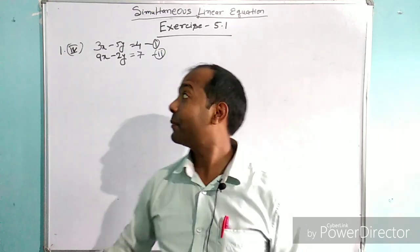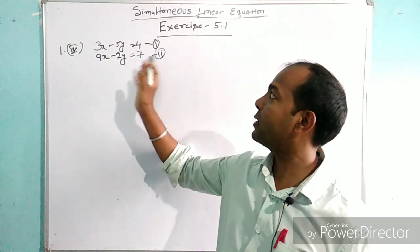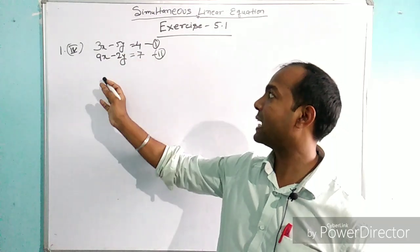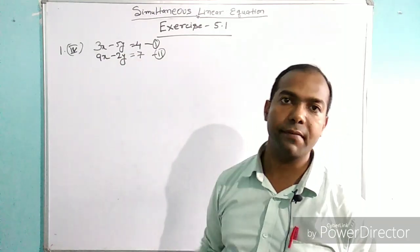We have the question: 3x minus 5y equal to 4, and 9x minus 2y equal to 7.